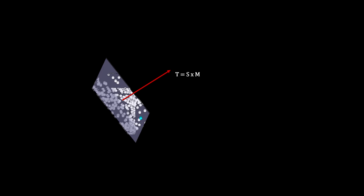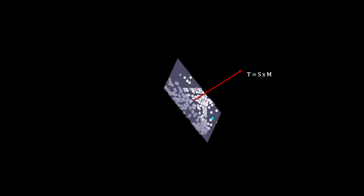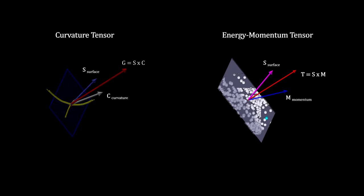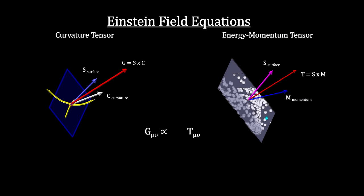The final step for the gravitational field equations is to determine the constant of proportionality between the Einstein tensor that encapsulates curvature volume and the energy-momentum tensor that encapsulates the total energy density.